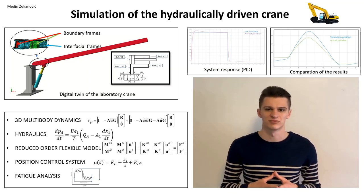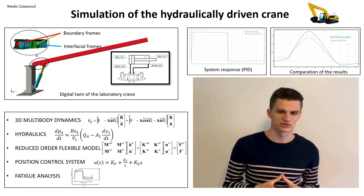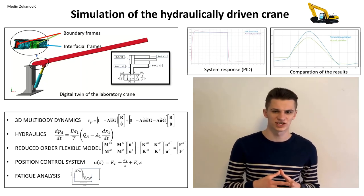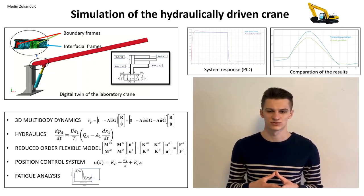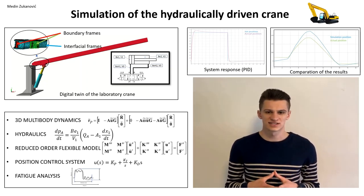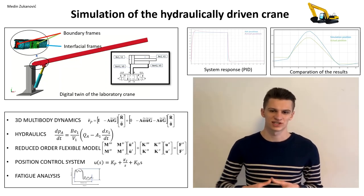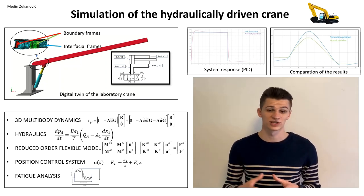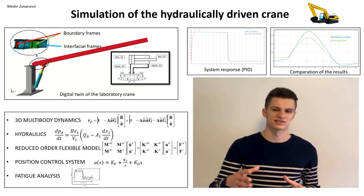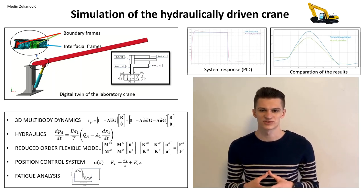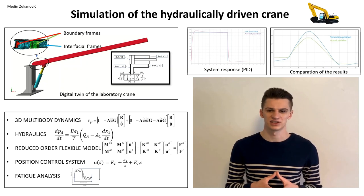The final part of the work is the position control system modeling. For this project, the PID control system was chosen. The system calculates the error between the actual crane position and the set position and according to that error gives a response. The appropriate response was achieved after the PID tuning.